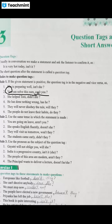The third example is: she helped Tom, didn't she? So the tag uses 'didn't' and the subject 'she'.